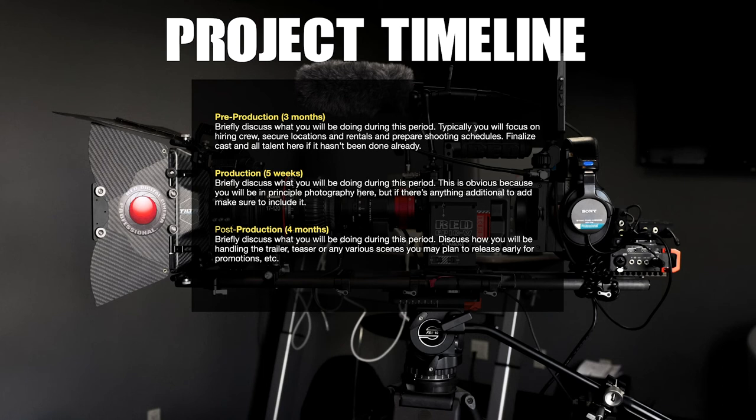Your project timeline slide should be brief and to the point — covering pre-production, principal production, and post-production, what's going to be taken care of in each period and how long it'll take. You'll probably want a separate, more detailed sheet not included in the pitch deck. This slide is the bird's eye view, and if they want more detail, have that available upon request.